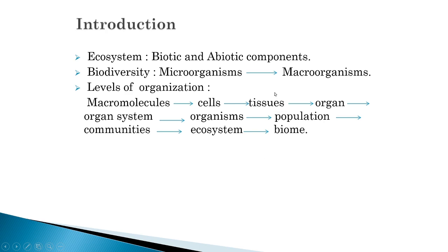Molecules are later converted into cells. Cells with similar kinds of functions group together to form tissue. Tissue groups together to form organs. Organs work together in coordination, which is called an organ system. The whole organ system works for the organism, and organisms live in a population. Population is a part of communities; communities lead to form ecosystems and ecosystems lead to form biomes — as we covered in previous lectures.